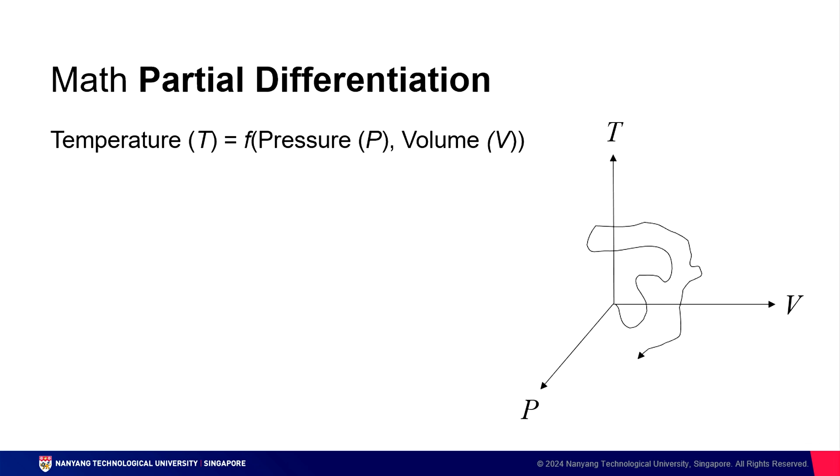So let's consider these three variables: temperature, pressure, and volume. How are they related? Temperature is a function of pressure and volume. And as pressure and volume change, according to this trace over here, temperature responds in a nonlinear manner.